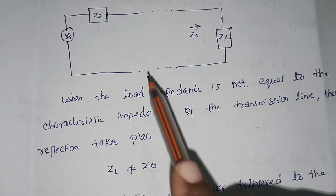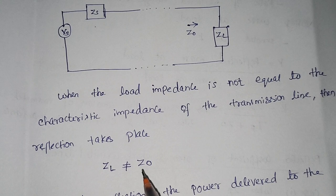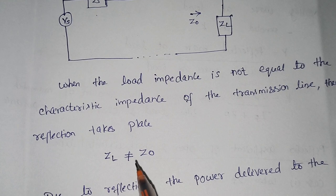In an ideal transmission line, this reflection will be absent — it should not take place. Reflection should be nil. But practically, due to impedance mismatch between the load and the characteristic impedance, reflection will be happening in a transmission line.